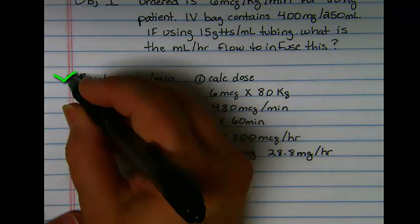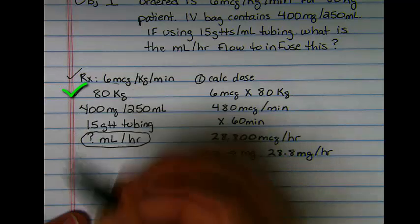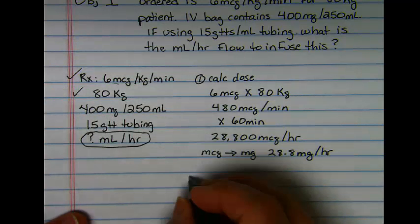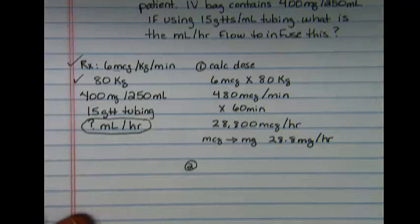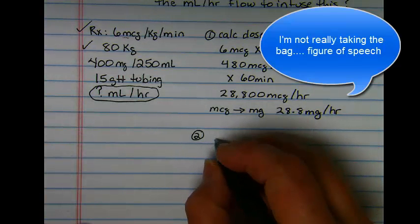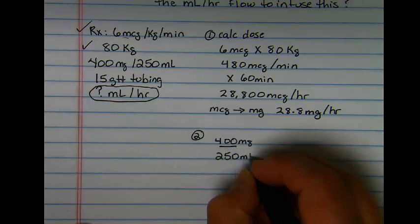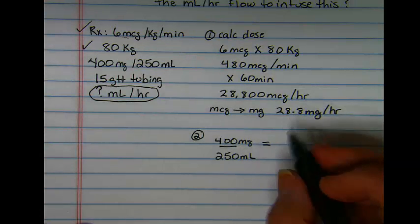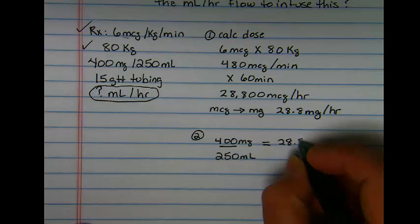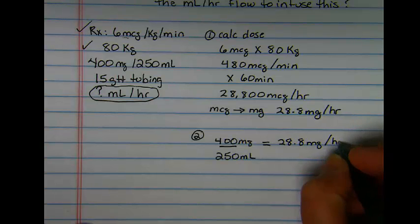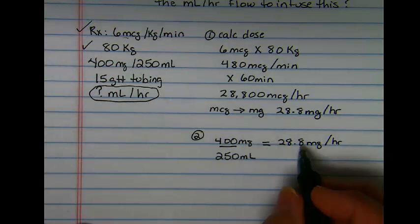In essence, I've used my order, my weight, and now for my second formal step, I'm going to take my IV bag, which is 400 milligrams and 250 milliliters, and I have decided I need 28.8 milligrams per hour out of this bag and drug.